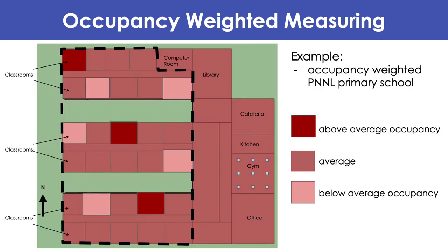Using the PNNL prototype as an example again, assuming we only want to measure classrooms with occupancy-weighted measuring, we have classrooms with varying occupancies shown through a heat map. Based on occupancy-weighted measuring, you can expect the darker red-shaded classrooms to have a greater chance of being measured compared to the lighter red-shaded classrooms.